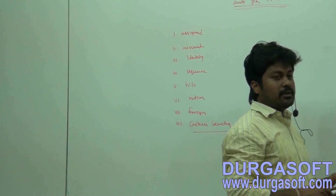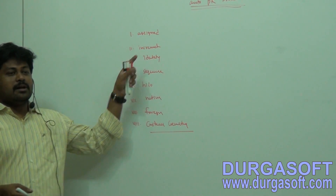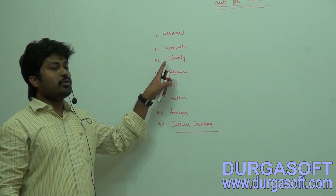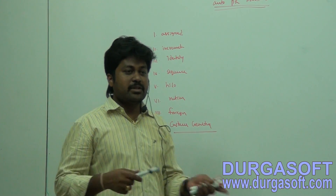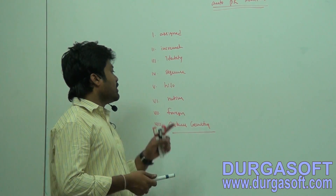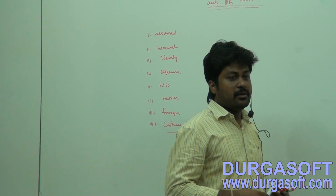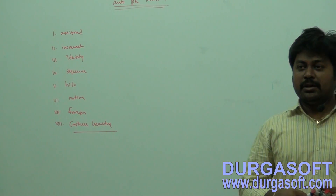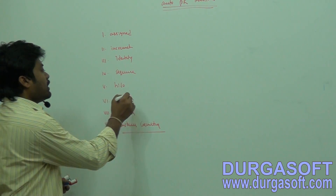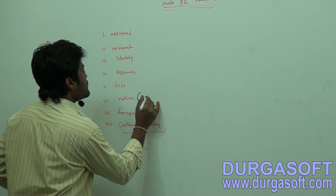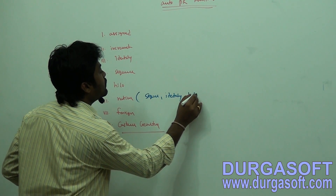We know how to use assigned — in that case, we are responsible to pass IDs. In case of increment, the application does the incrementation. With identity, the database increments your IDs. With sequence, both the database and application do the incrementations. With Hilo, your application increments based on Hilo values. In case of native, it may use either sequence or identity or Hilo.